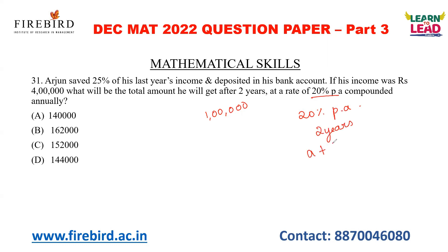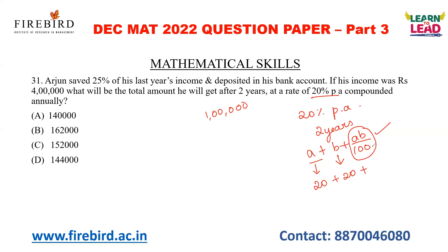You can use a shortcut formula A + B + AB/100 for these types of questions. The first A represents the interest for the first year — it is 20% — and B represents the interest for the second year, again 20%. AB/100 represents the compound interest effect: for the first year's interest amount, they will also calculate interest for the second year. So you multiply both the interest rates divided by 100. If you solve this: 40 plus 20 into 20 is 400, divided by 100 is 4. So the total is 44%.